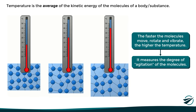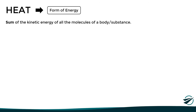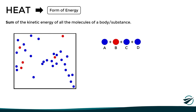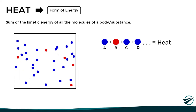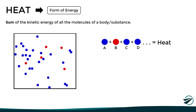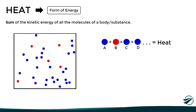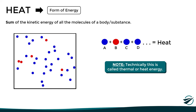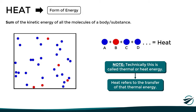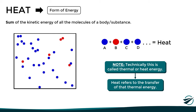Now that we know what temperature is, let's move on to the concept of heat. Heat, in essence, is a form of energy, and we can think of it as the sum of the kinetic energy of all the molecules of a body or substance. So, unlike temperature, we are no longer talking about the average energy of each molecule, but rather the sum of the energy of all molecules. Technically, what we have just said corresponds to the concept of thermal energy or heat energy, while heat as such refers more to the transfer of that thermal energy, but for simplicity in this explanation, we will use these terms interchangeably.